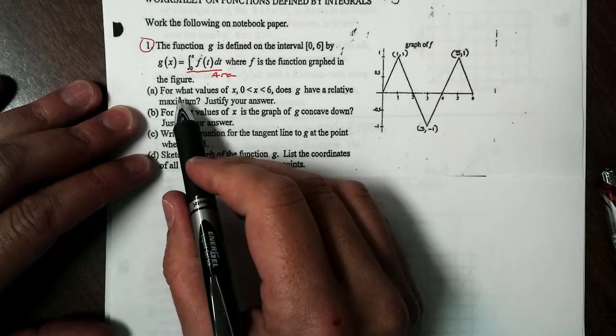So what we're asked here is for what values of x between 0 and 6 does g have a relative maximum? So we know the phrase relative maximum, that's our first derivative test. We have to call them sign charts, okay? Don't forget to do your sign charts on this. So as we take a look down here, for number one, for part a, we're looking for where g has a relative max.